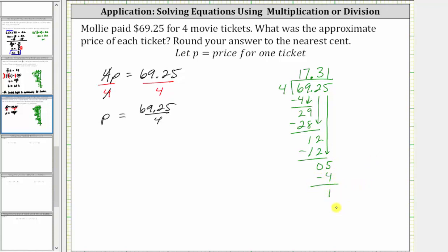Now we can't stop here because we're told to round to the nearest cent, which means we need to go out one more decimal place or out to the thousandths place value. And therefore, we place another zero to the right of the five in the dividend and bring the digit down. And now determine how many fours in 10, which is two. Two times four is eight. Subtract, the difference is two.